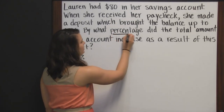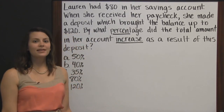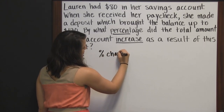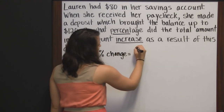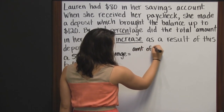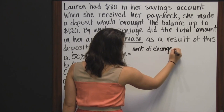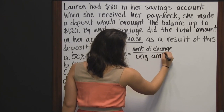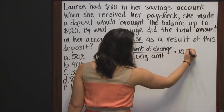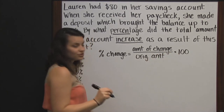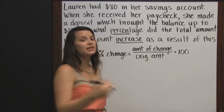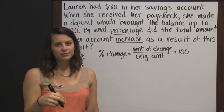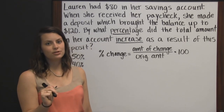This is a percent increase problem, and there's a formula for that. The formula to find a percent of change is to find the amount of change, divide that by the original amount, and then multiply that amount by 100. The reason you multiply by 100 is because when you divide, you'll get a decimal answer, and to change a decimal to a percent, you multiply by 100, or simply move the decimal two places to the right.